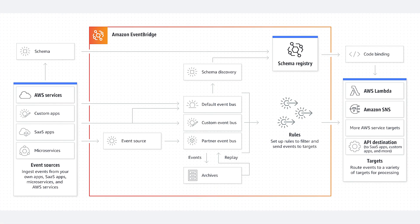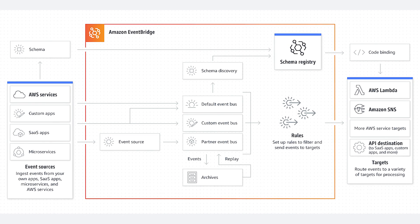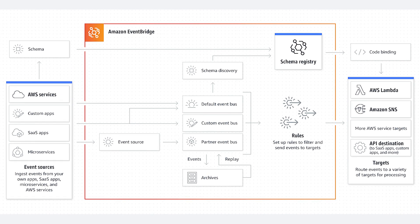EventBridge is the serverless event bus service that can be used to receive and respond to events from a variety of sources, including Lambda functions, API destinations, and even other event buses. EventBridge is increasingly considered the keystone service of any event-driven architecture hosted on AWS. Earlier this month, AWS announced the new EventBridge Scheduler, a managed interface to schedule time-based events to trigger actions in over 270 different AWS services.